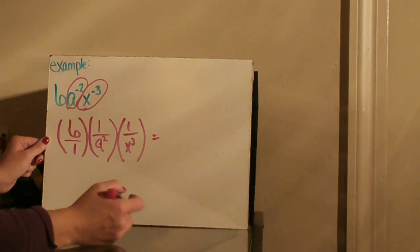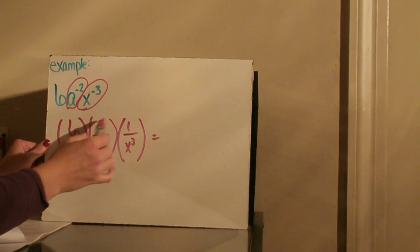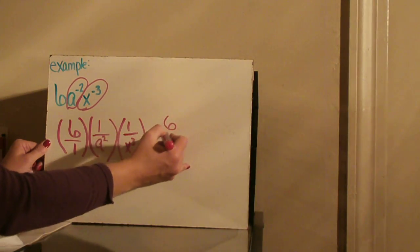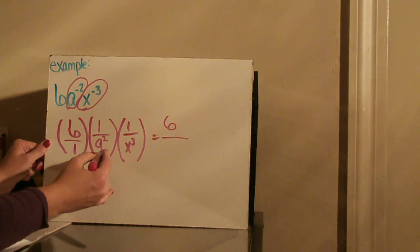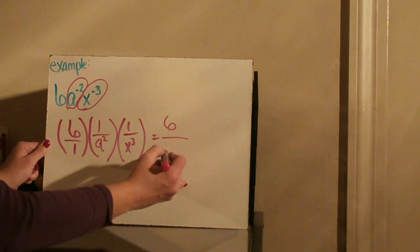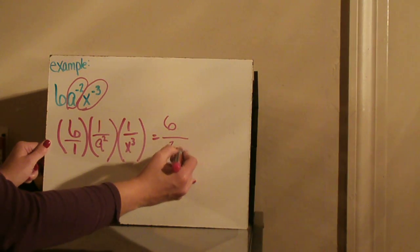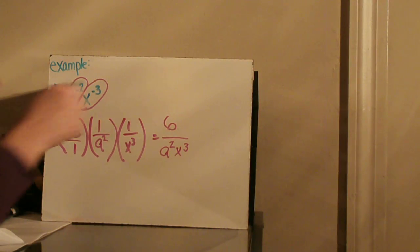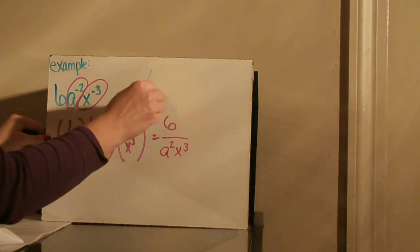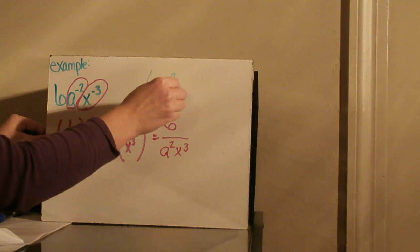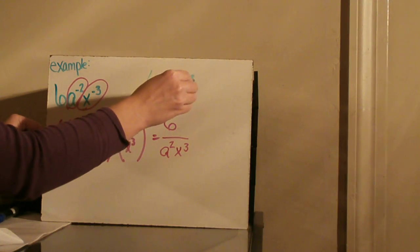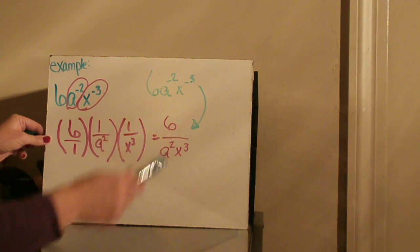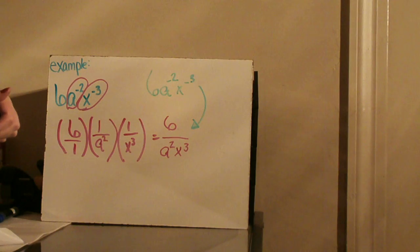And x to the negative 3 simplified is 1 over x cubed. Now I just multiply: 6 times 1 times 1 is 6, and 1 times a squared times x cubed gives a squared times x cubed in the denominator. So 6 times a to the negative 2 times x to the negative 3 simplified is 6 divided by a squared times x cubed.